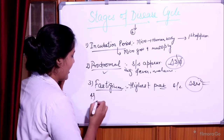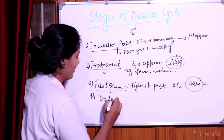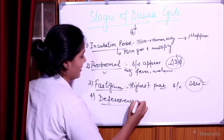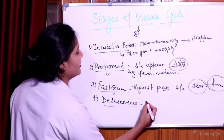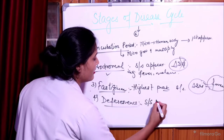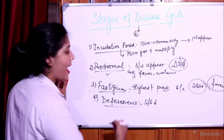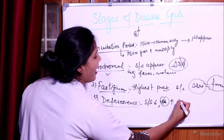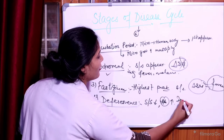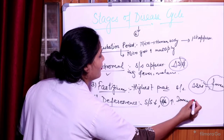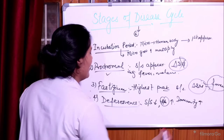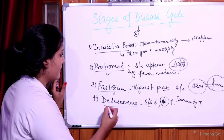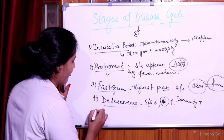The fourth stage is deferens stage. In this stage, the signs and symptoms are decreasing, as the antibodies are stimulated and the immune response — immunity — is also increased. That's why the signs and symptoms are decreasing. This is the fourth stage, deferens stage.